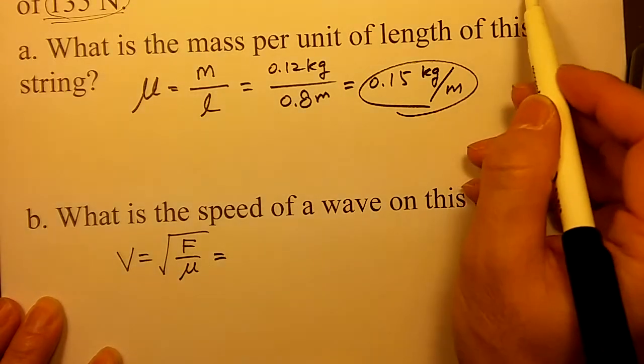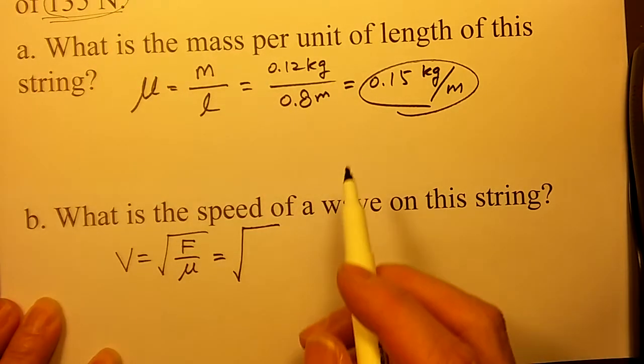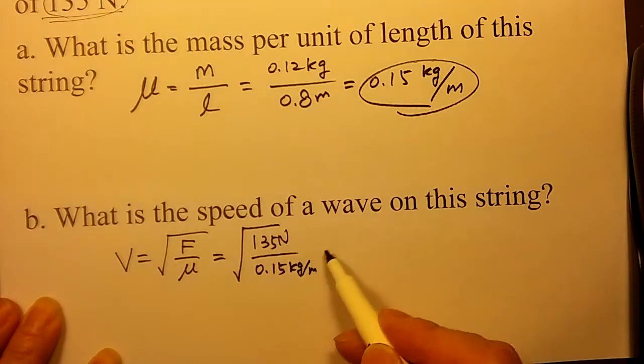F, this is your F as tension. Okay? Your tension is 135 newton over your mu is 0.15 kilogram per meter. Then, you will get your velocity.